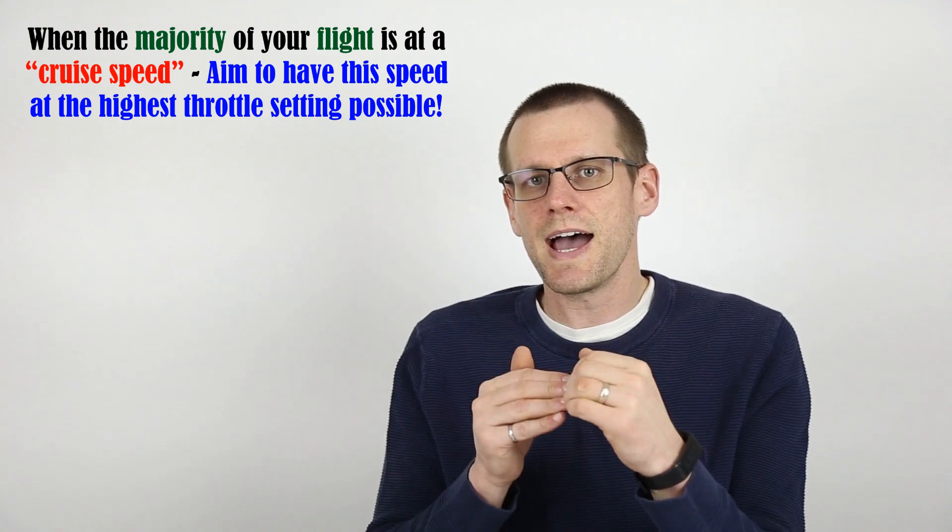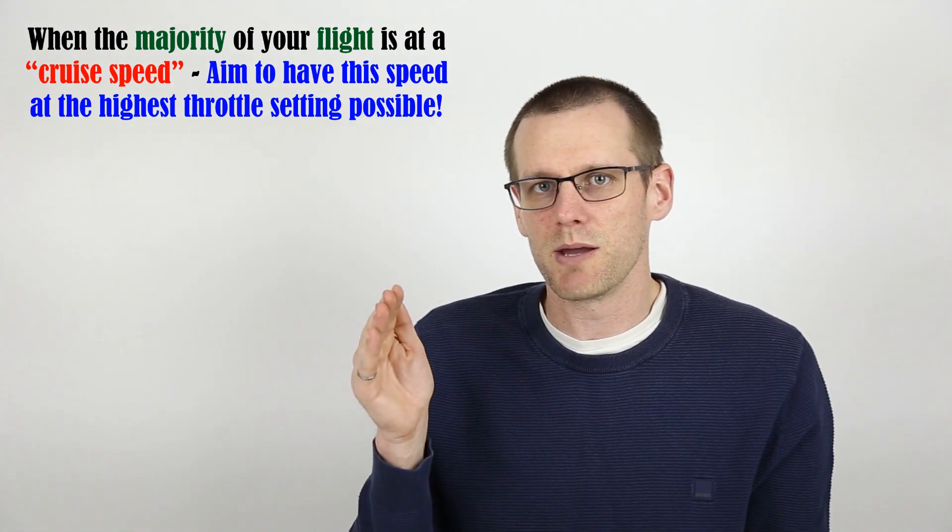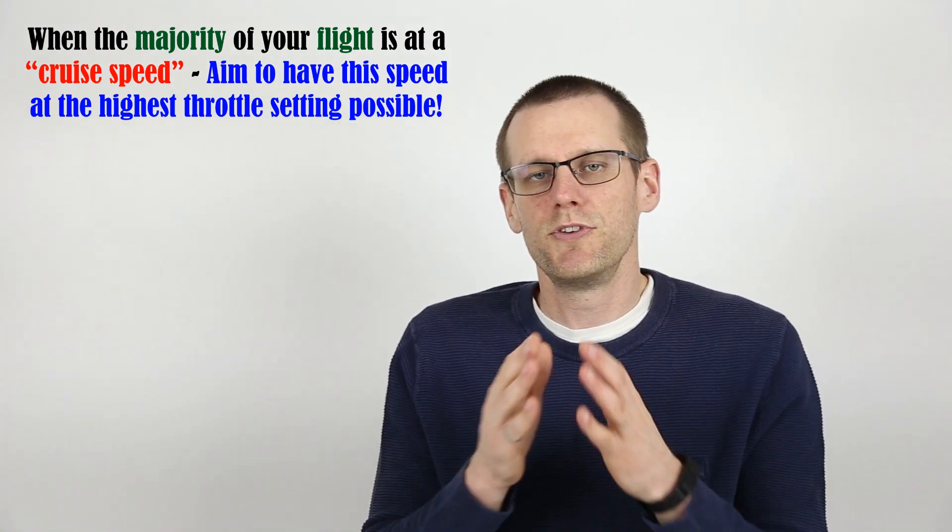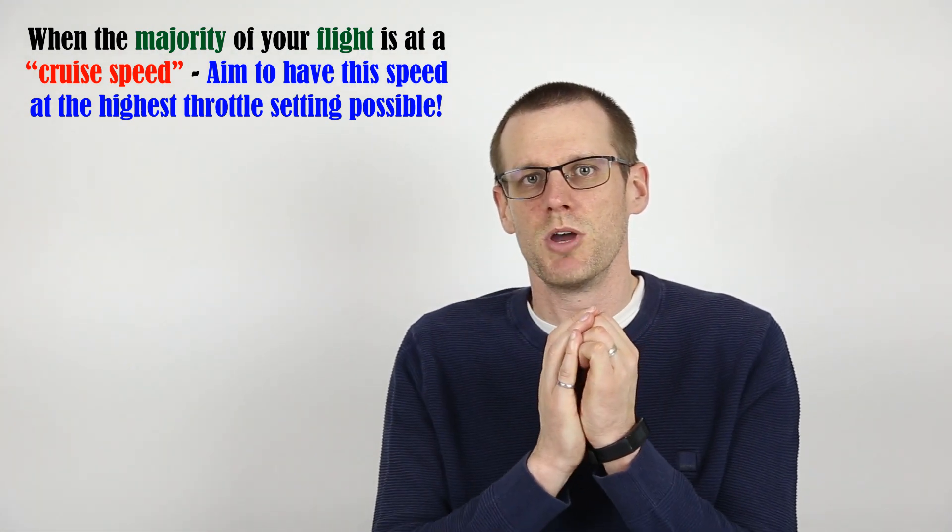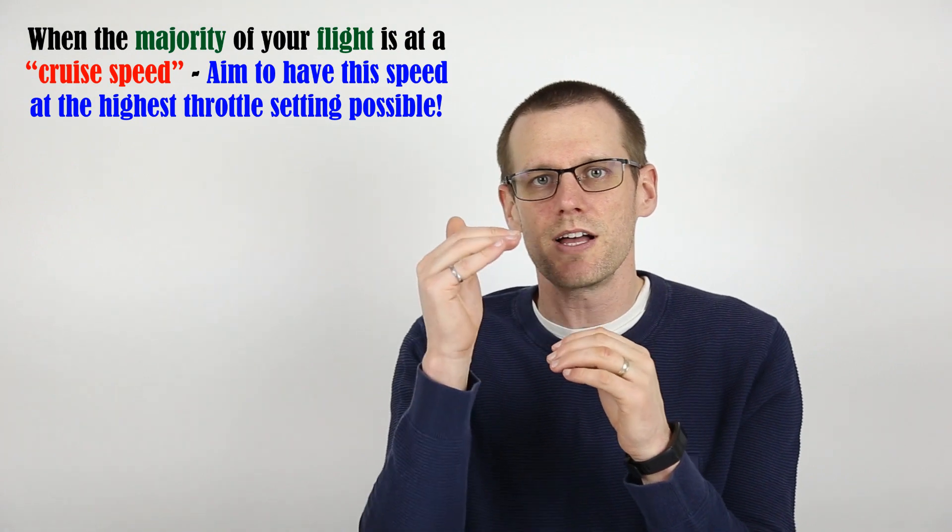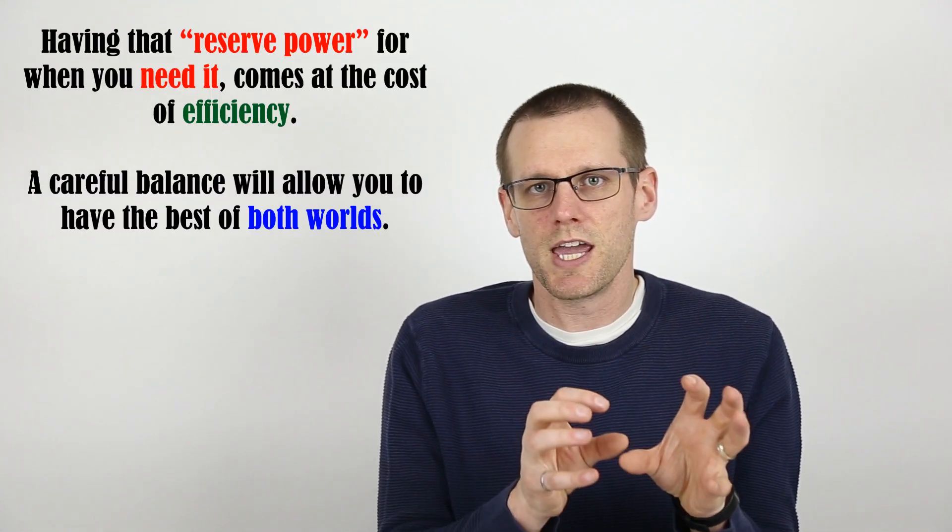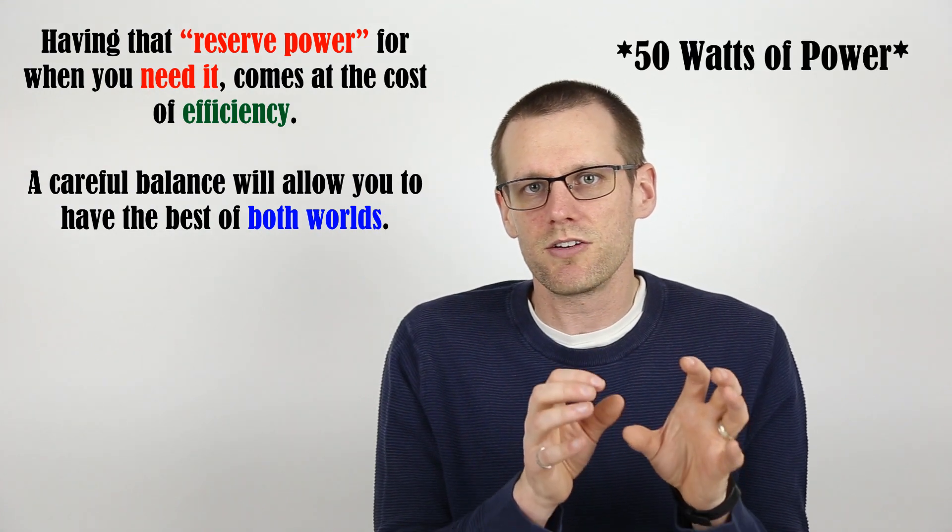If you end up making a change such as increasing the kv and all else stays the same, or you end up increasing the cell count and all else stays the same, in order to achieve that same 50% mechanical output power, you're now going to have to reduce your throttle setting.